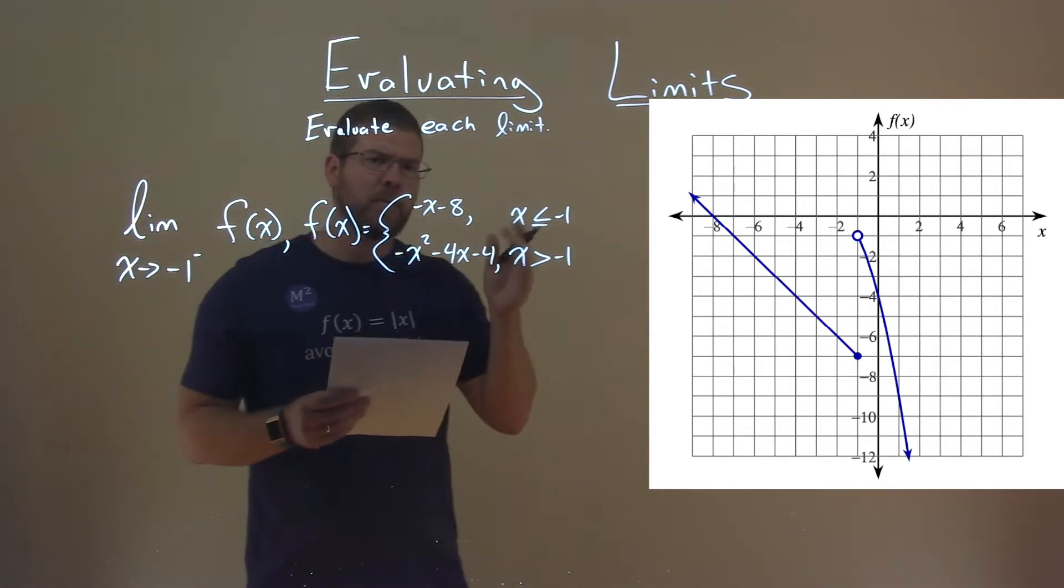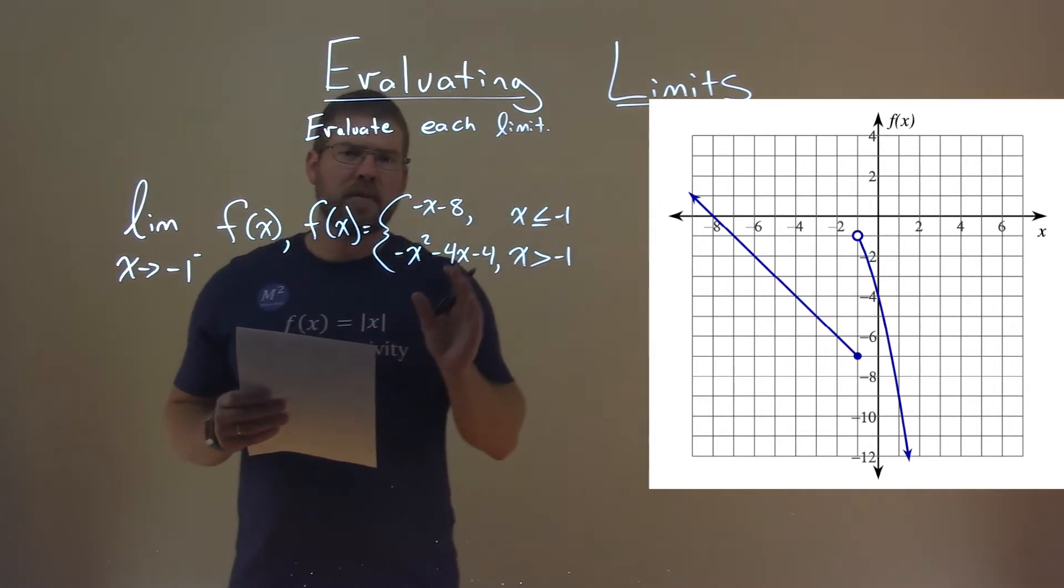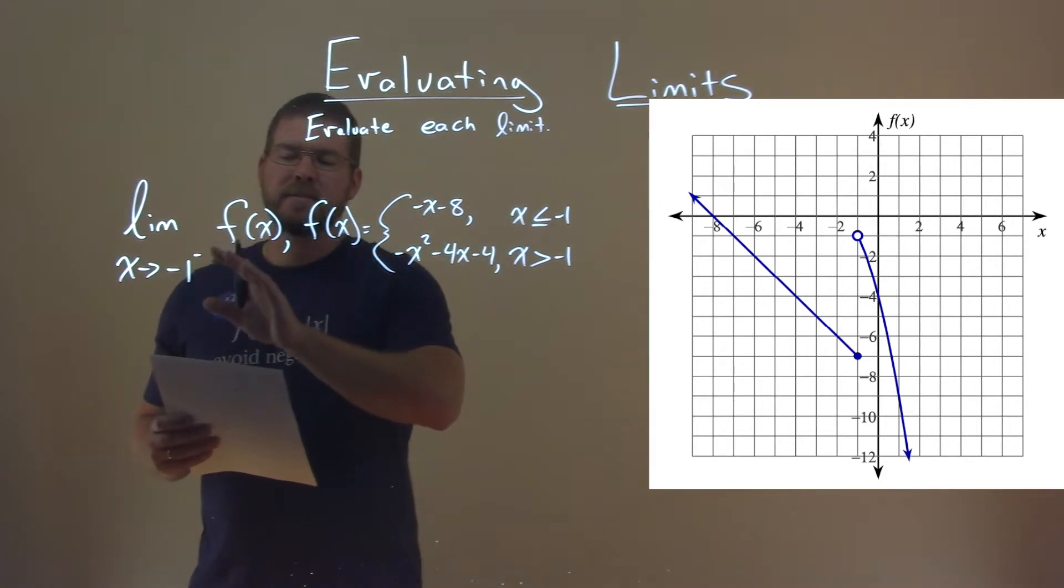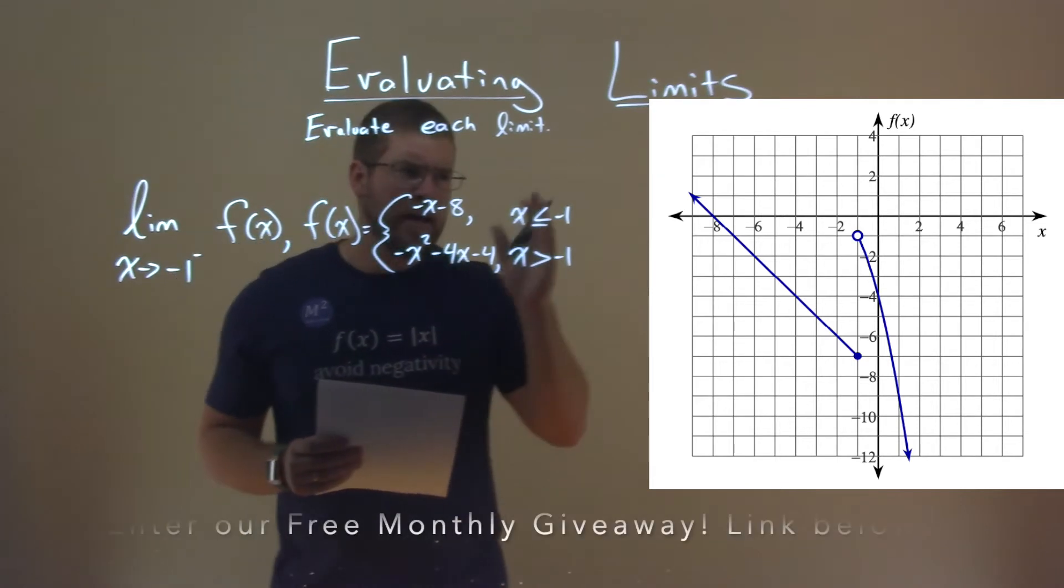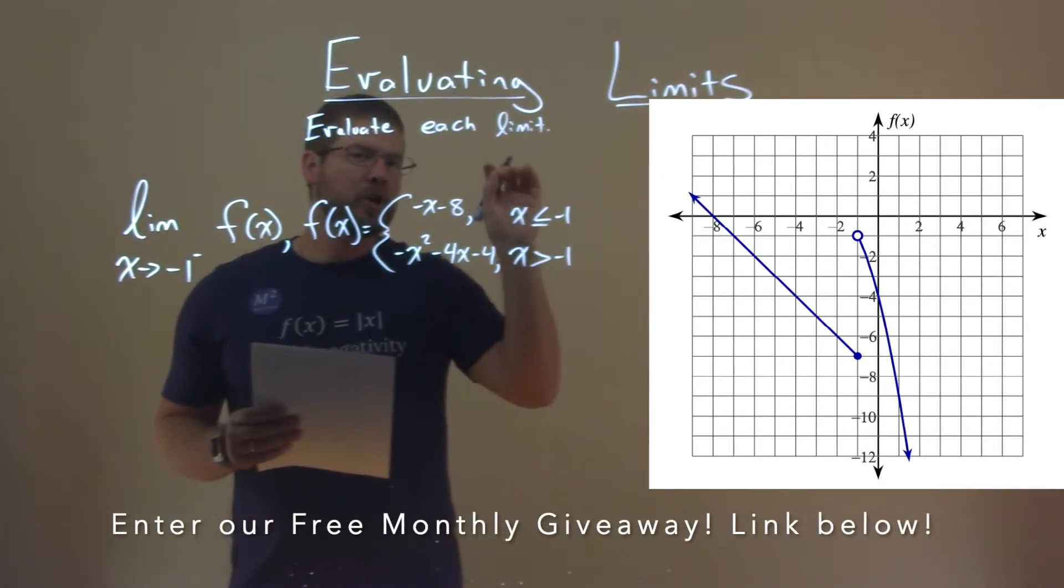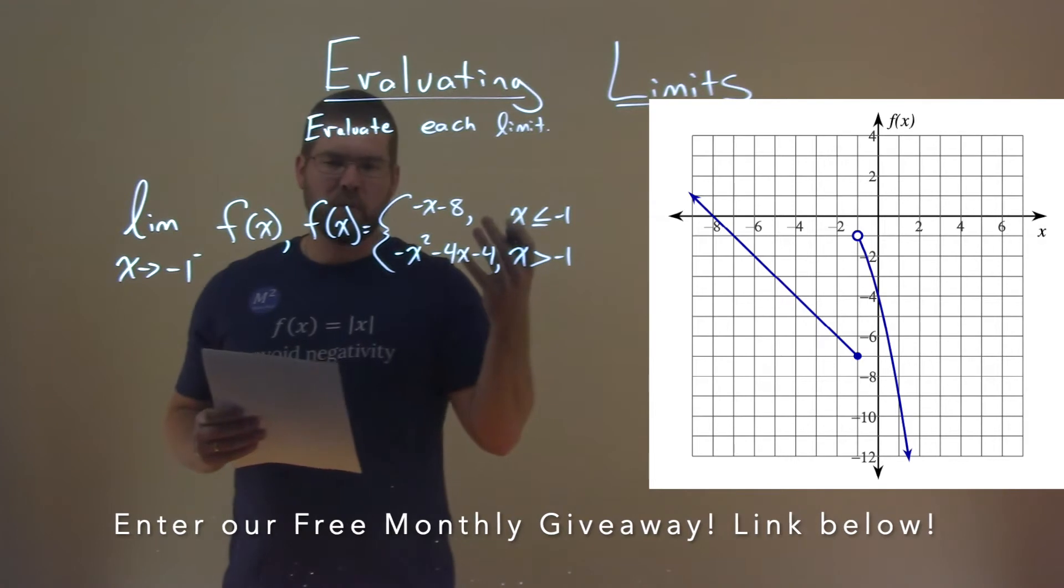We can see that in our graph here that's provided. Now notice here, they said we have to find when x is approaching negative 1, and notice that's where the jump happens. So we really have to interpret where in this graph we're going for, which line.